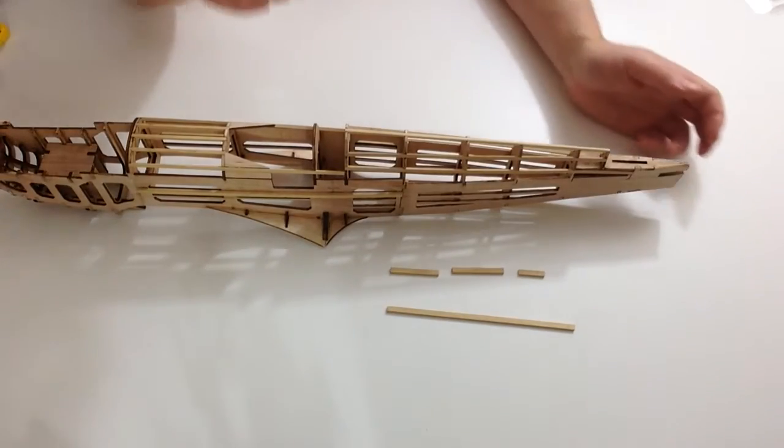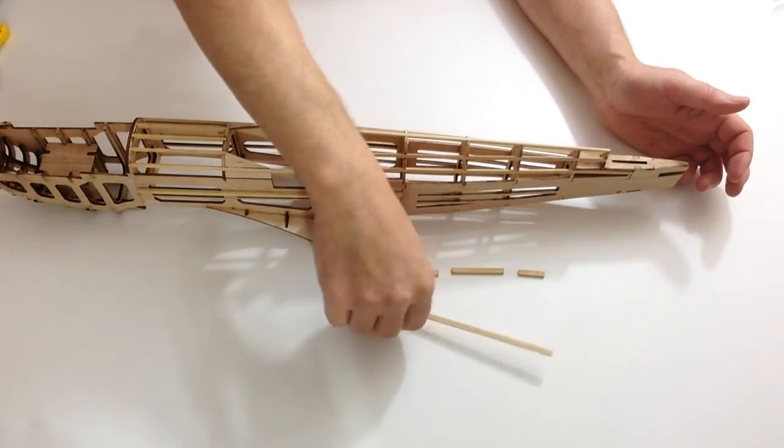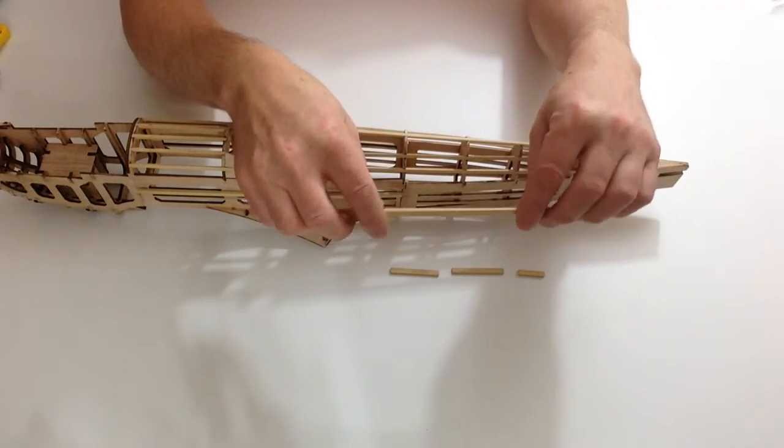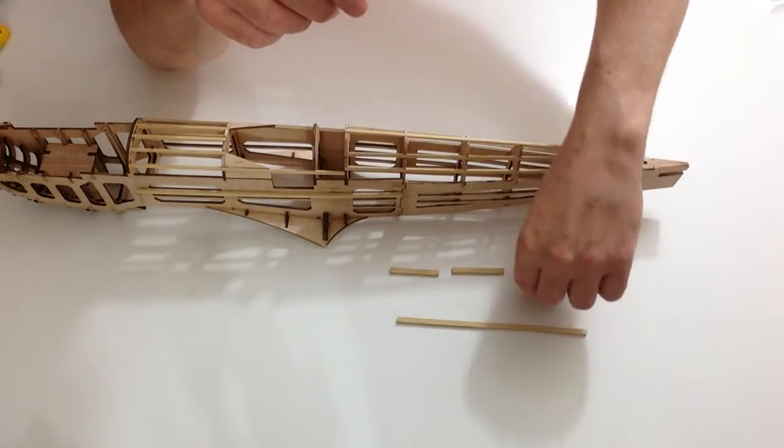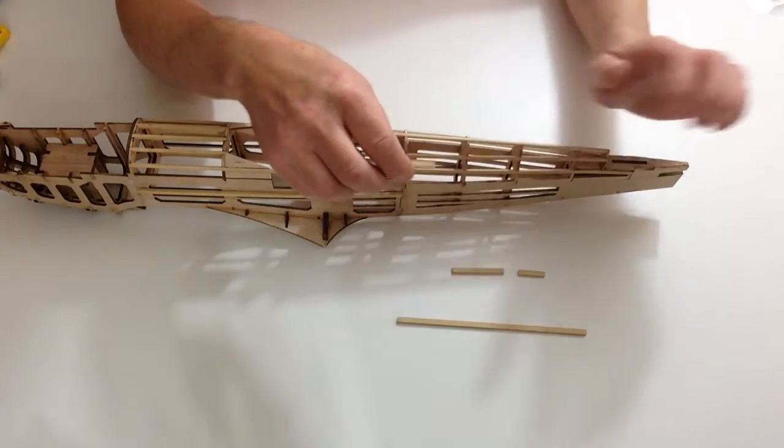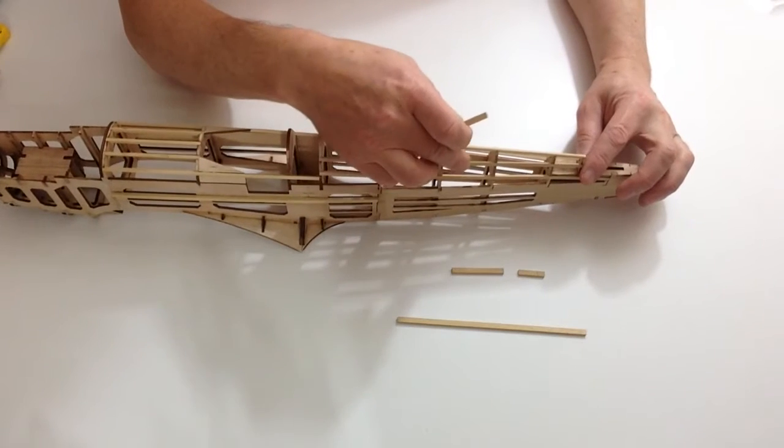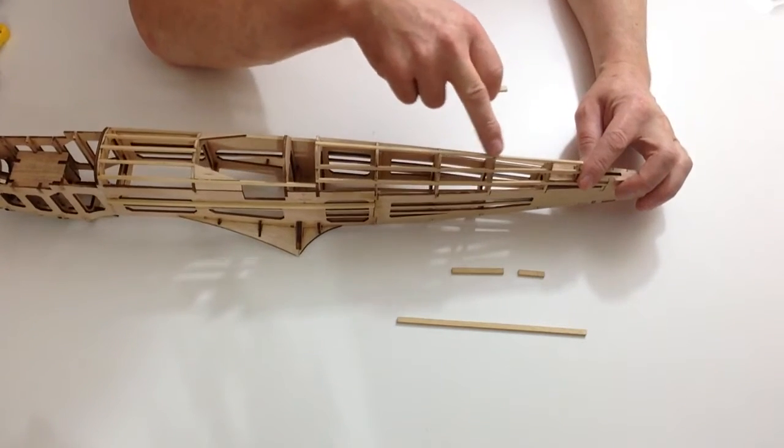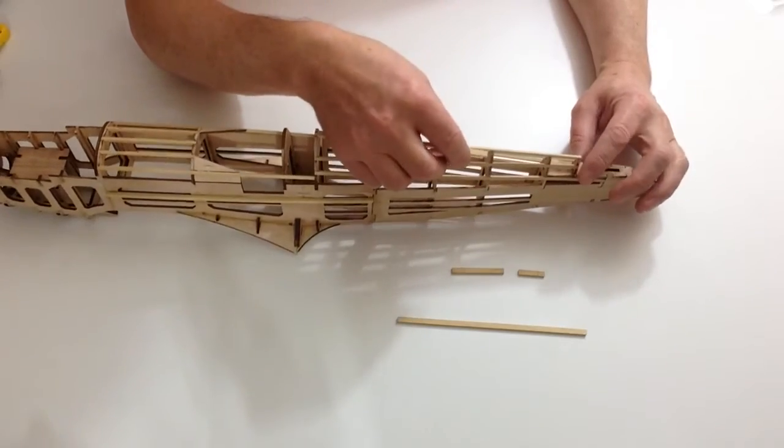Retrieve the fuselage and some 3x5mm wooden strips and cut 3 strips, then glue them in between frames as shown here, here and here, and also in your instructions.